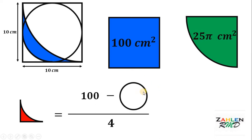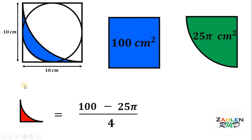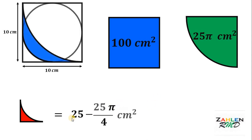We already know the area of the square is 100 square centimeters. Now, what is the area of the circle inside? Area = π × r². The radius of the circle inside the square is half the side length of the square, so r = 5. Therefore, the area of the circle = π × 5² = 25π square centimeters. So the area of this triangle-like shape = (100 − 25π) ÷ 4 = 25 − 25π/4 square centimeters.